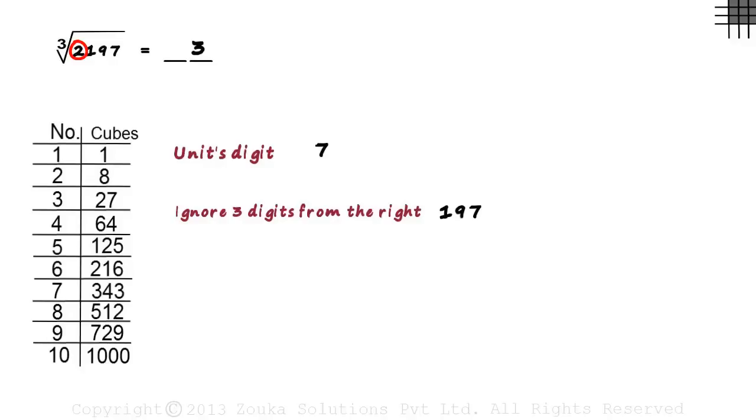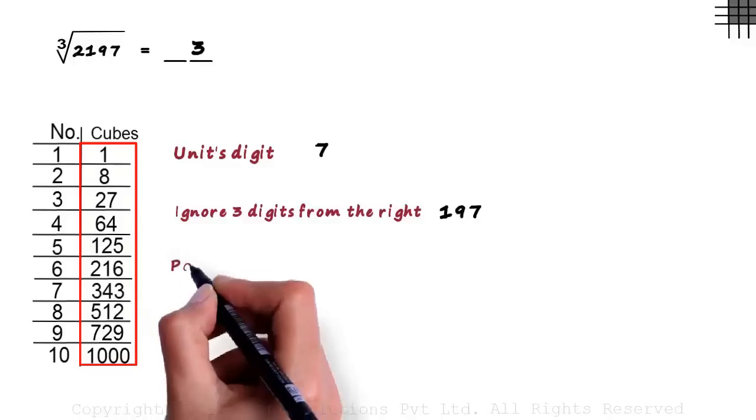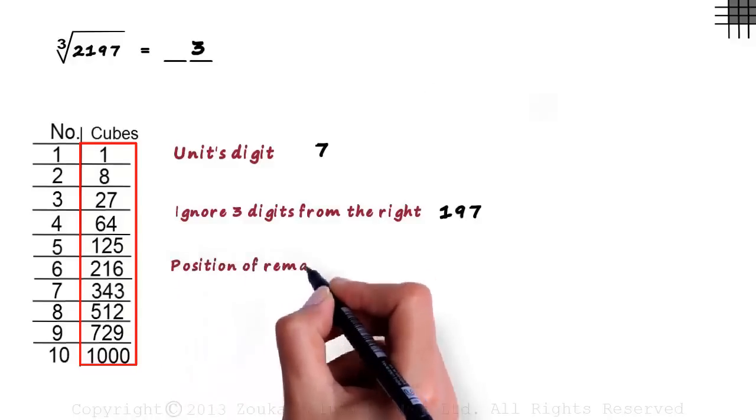This number is very crucial. We check where 2 is placed in the cubes column. That is, we check the position of the remaining number in the cubes column.